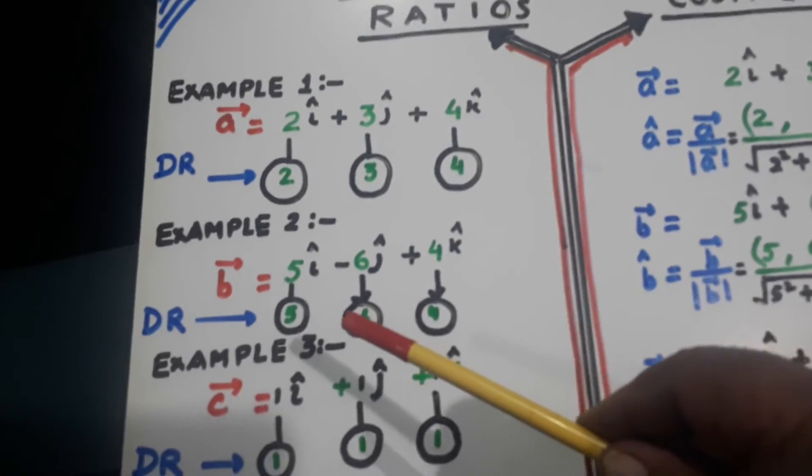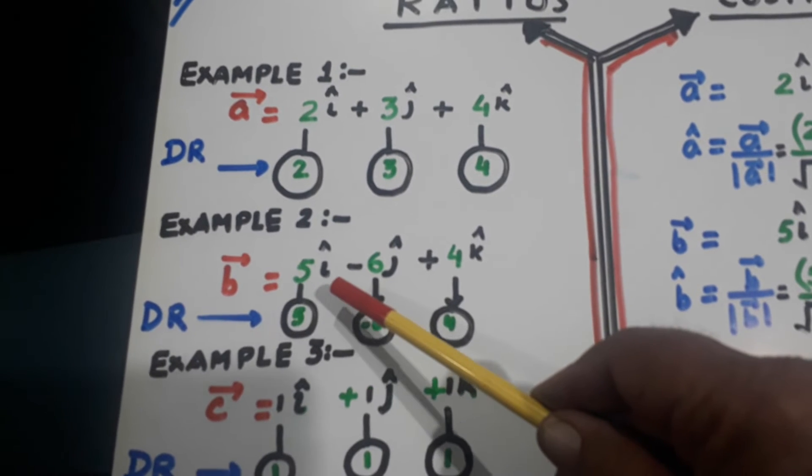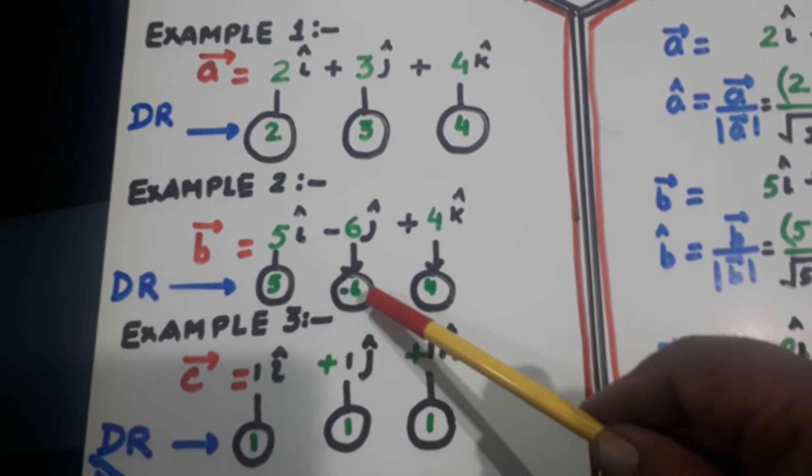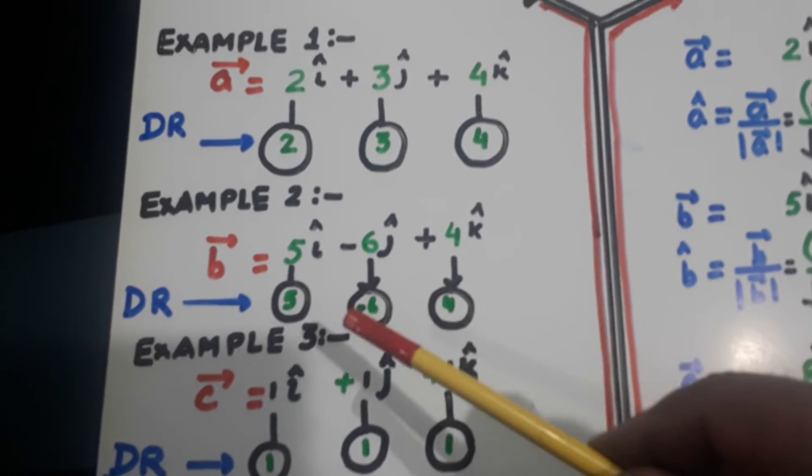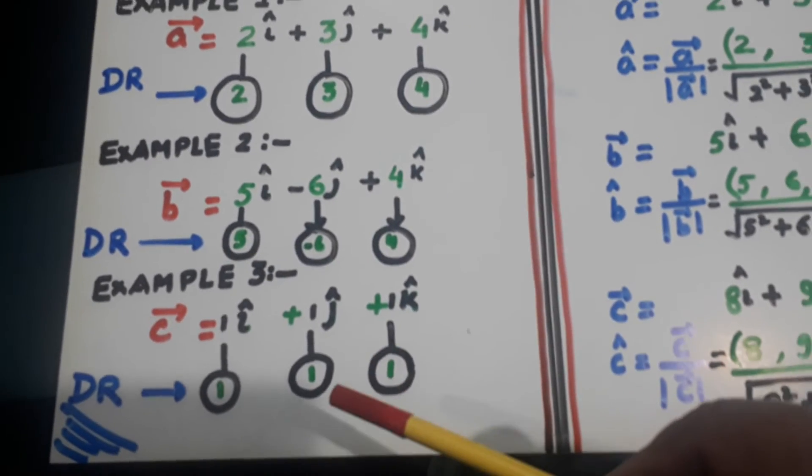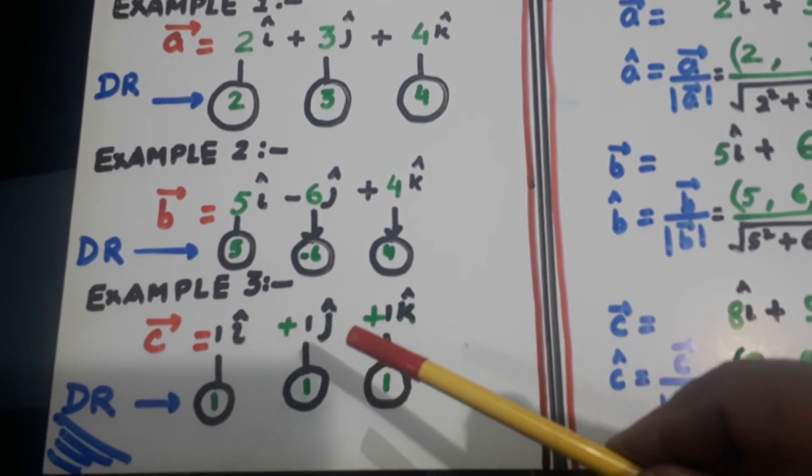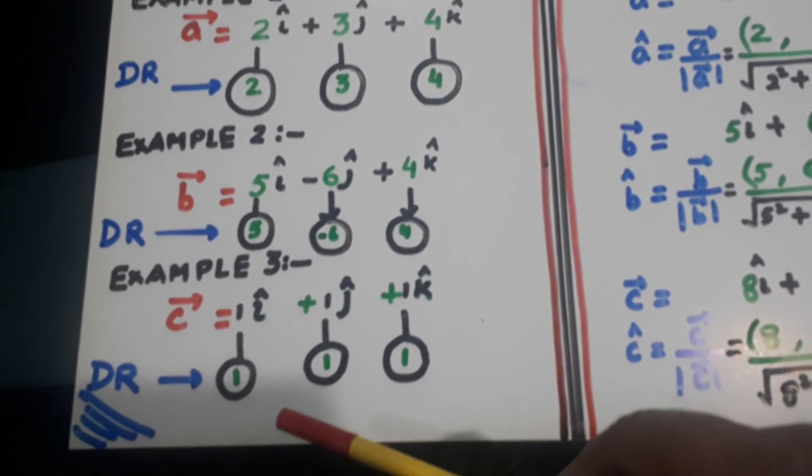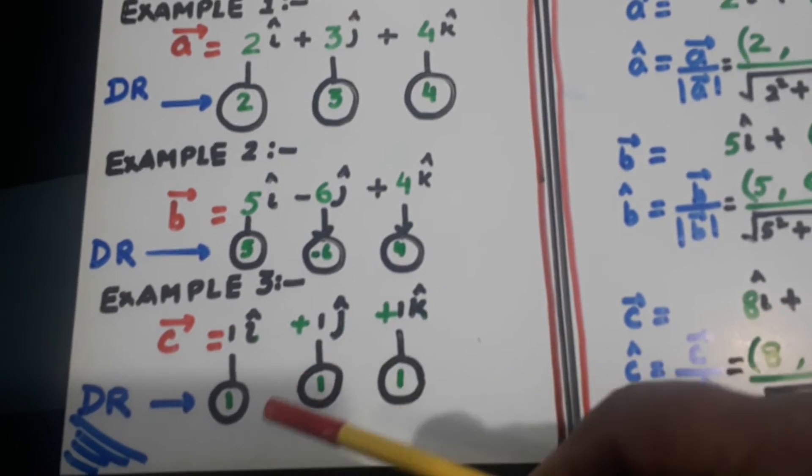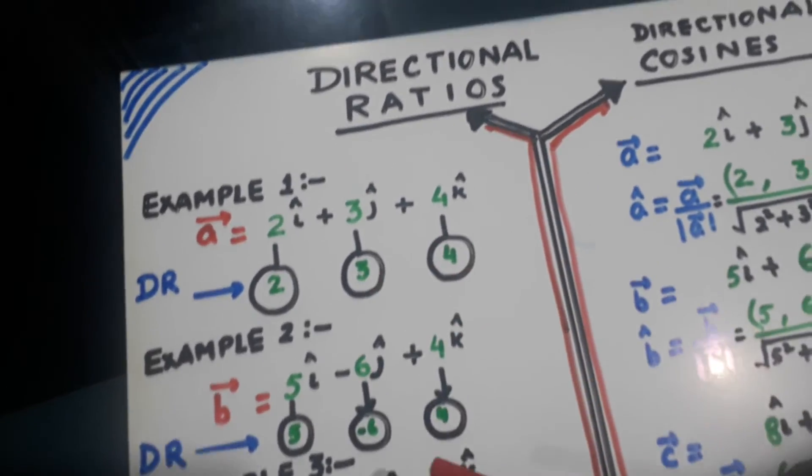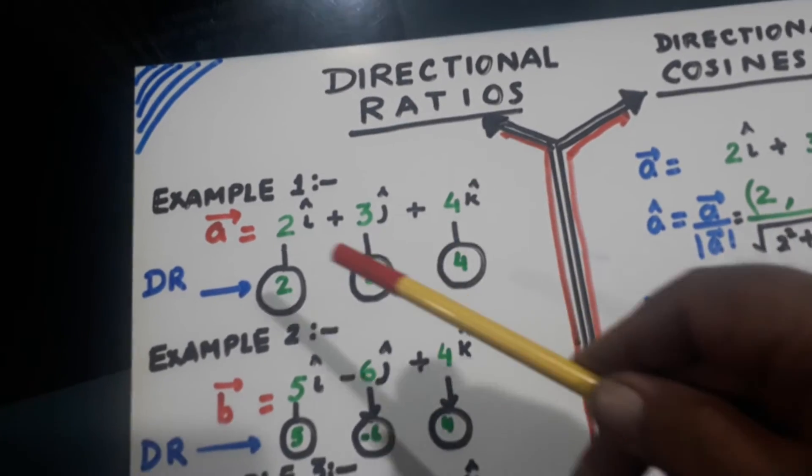Similarly, in case of b, 5, minus 6 and 4. They are the doctors. Similarly, 1i, 1j, plus 1k. This 1, 1, 1, they are called the doctors. So there are three doctors with the vectors.